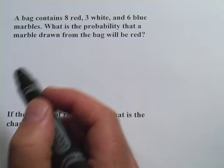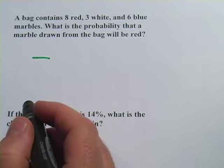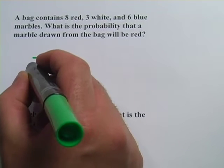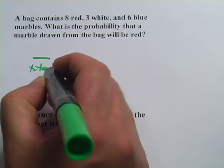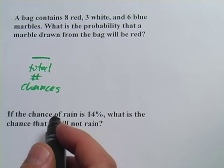So when we figure out probabilities, we usually start with a fraction, and the fraction has on the bottom the total number of chances, anything that could happen in this situation.